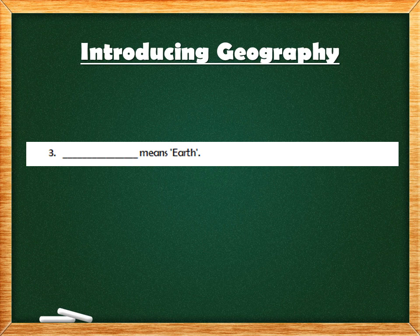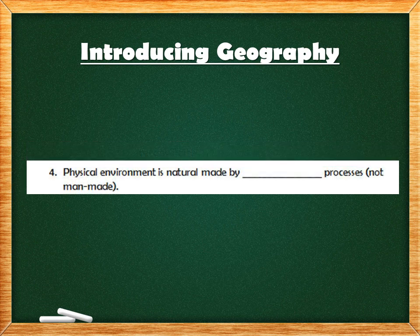The third question: blank means the Earth — GEO means the Earth. The answers for blanks 2 and 3 are both GEO, G-E-O. Question 4: The physical environment is natural, made by blank processes. There is a hint — it's not manmade. The answer is natural. Spelling is N-A-T-U-R-A-L.